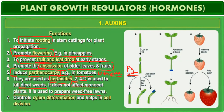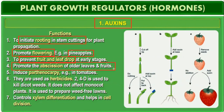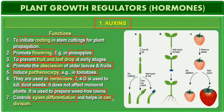In a rice field, applying 2,4-D will not affect the rice plant but will kill the unnecessary dicot weeds growing in that field. It is used to prepare weed-free lawns. Auxin also controls xylem differentiation and helps in cell division. These are the different functions of auxins.